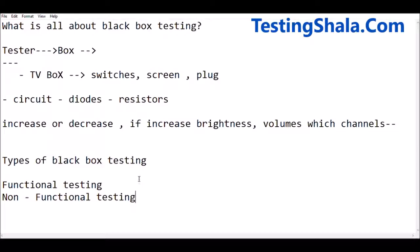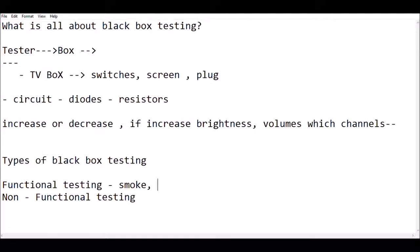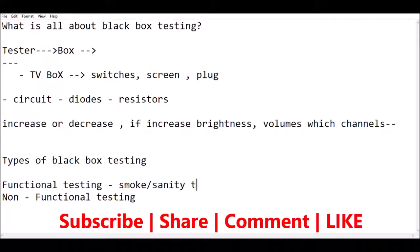Under functional testing, if you break it down further, you have smoke testing, where we just validate whatever the build which is given to us to test — before executing detailed tests, we check whether the application really works or not. That kind of testing we call smoke testing, also called sanity testing, before we take it up for detailed executions or return the build back to the developers.